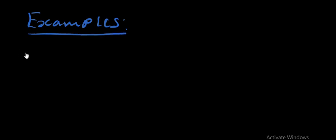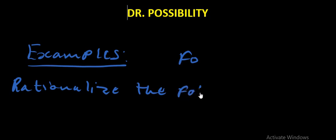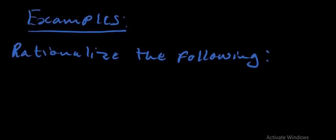So I'll quickly look at the examples. Please follow me well and make sure that you have a pen and a pencil. Our first example is: rationalize the following. When we talk of rationalizing, we simply mean that we are getting rid of the surds on the denominator.